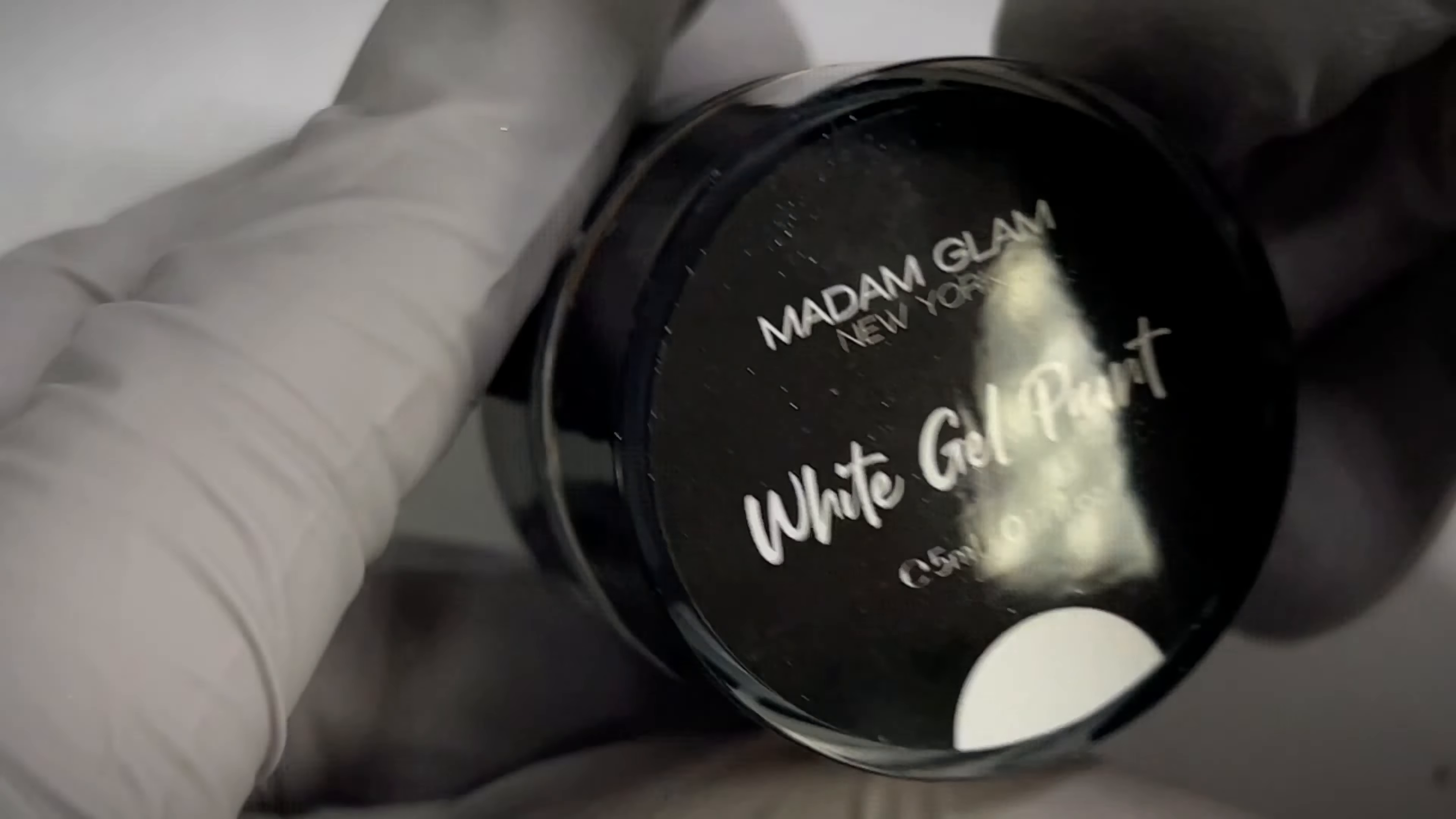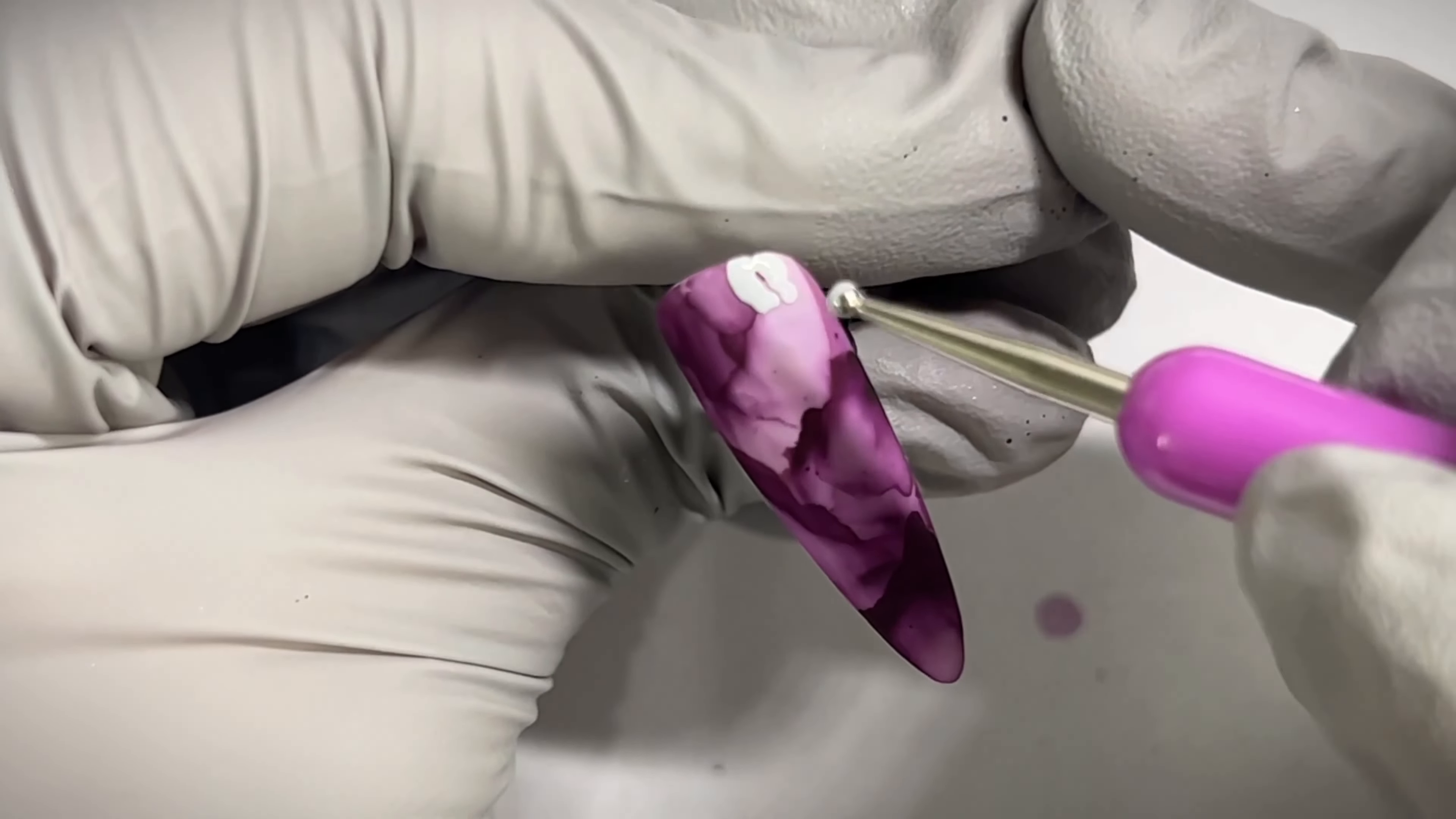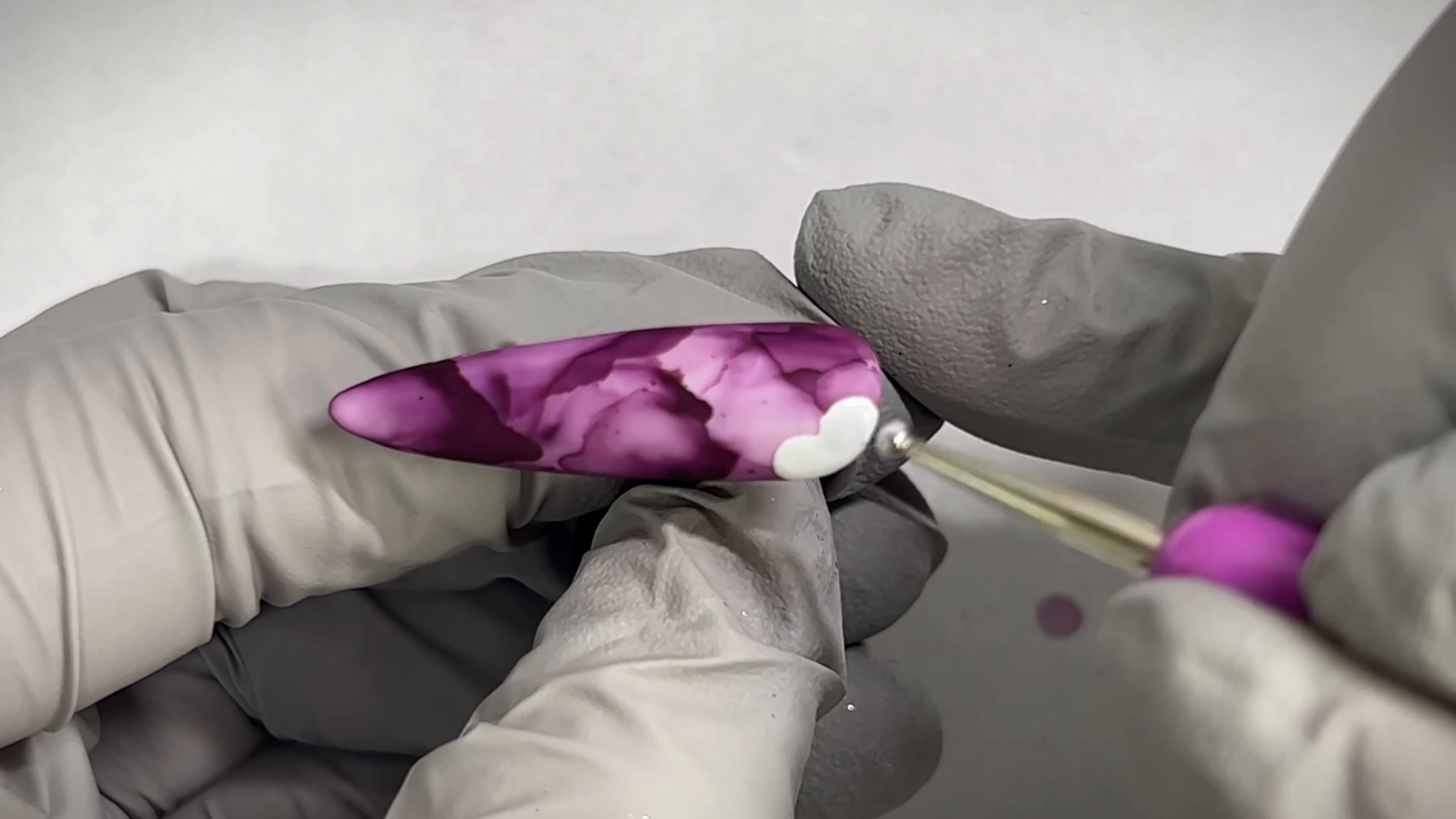Once you are satisfied with your marble, we're going to go in with this white gel paint also from Madam Glam and we're going to start creating some hearts. These hearts are all going to be different sizes and different directions, so just have fun with it and place it wherever you'd like. I also do find it much easier to create hearts using a dotting tool, so try that if you are struggling. I'm gonna go ahead and let this play out and once I finish the hearts for both nails I will come back.